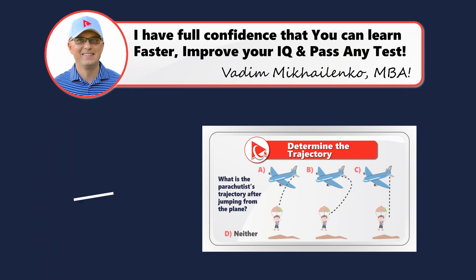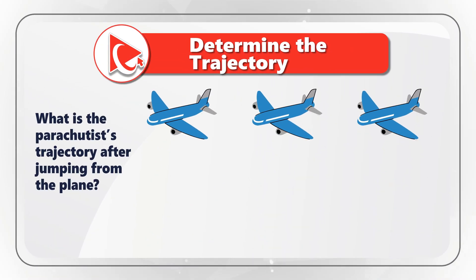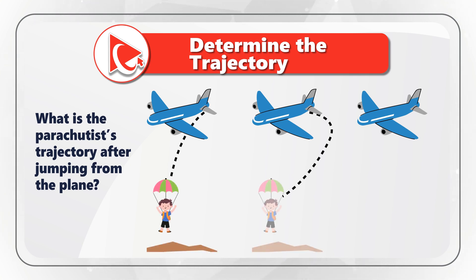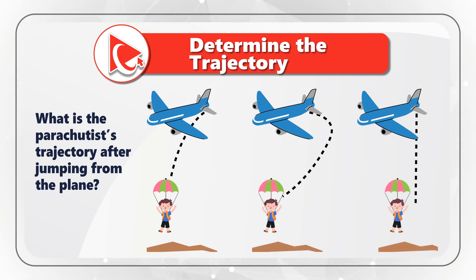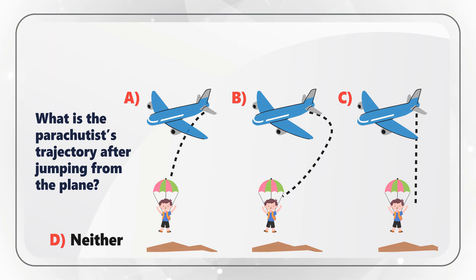Let's look at the question where you need to determine the trajectory after a parachutist jumps from the plane. Based on wind and other external conditions there would be multiple possibilities, but you need to select only one out of four possible choices: A, B, C, or Choice D — neither one. Take a close look at what is the parachutist's trajectory after jumping from the plane.